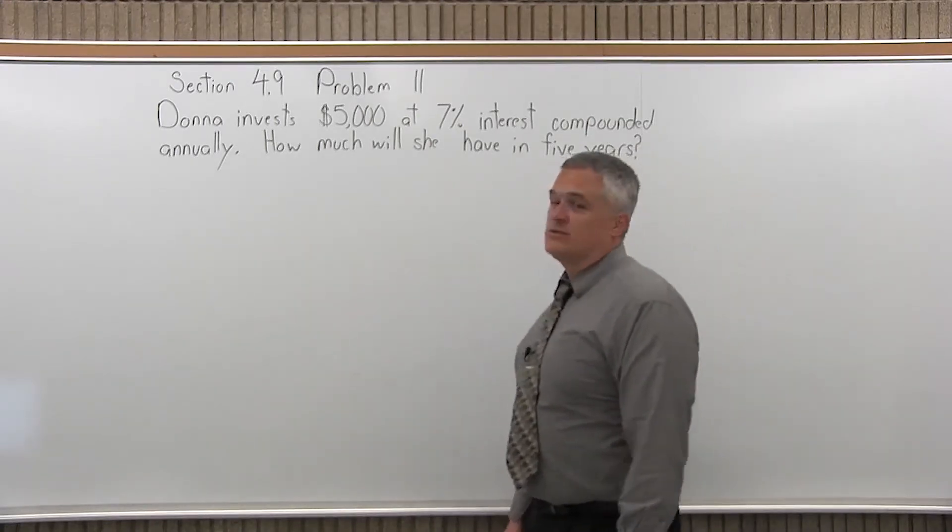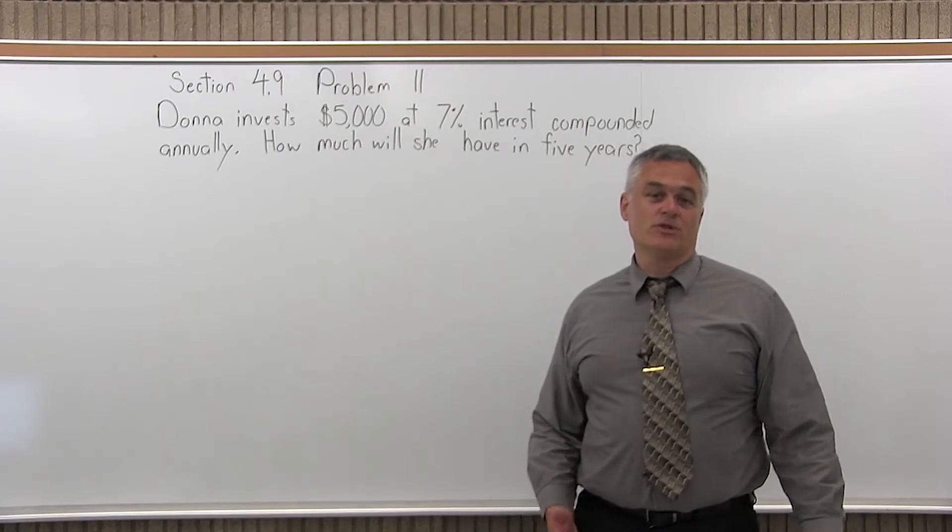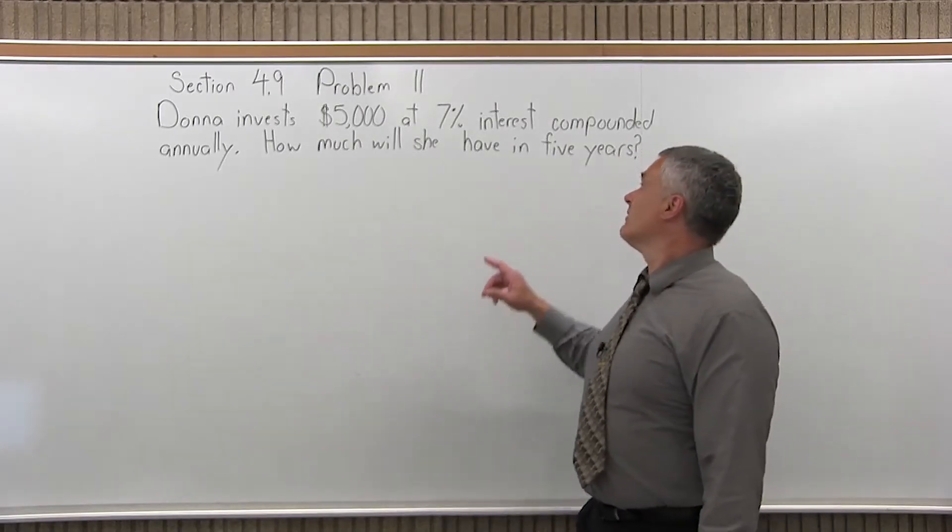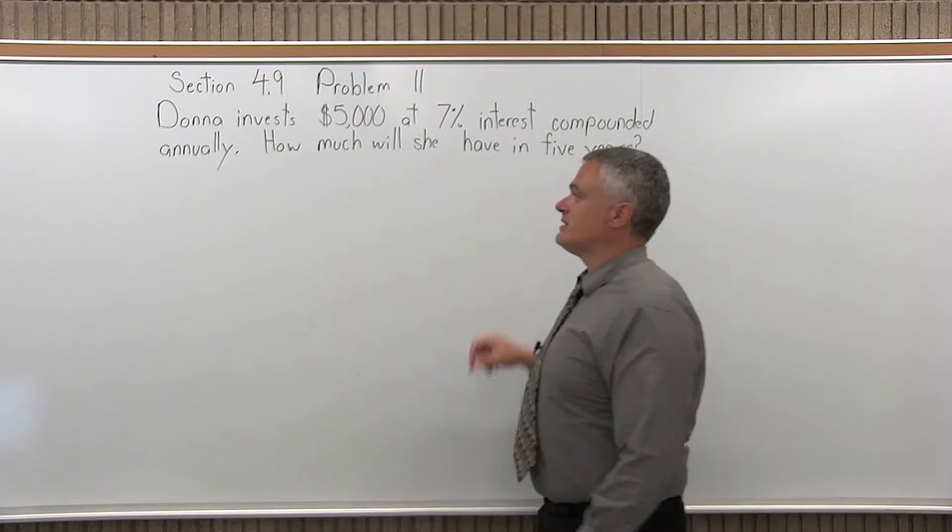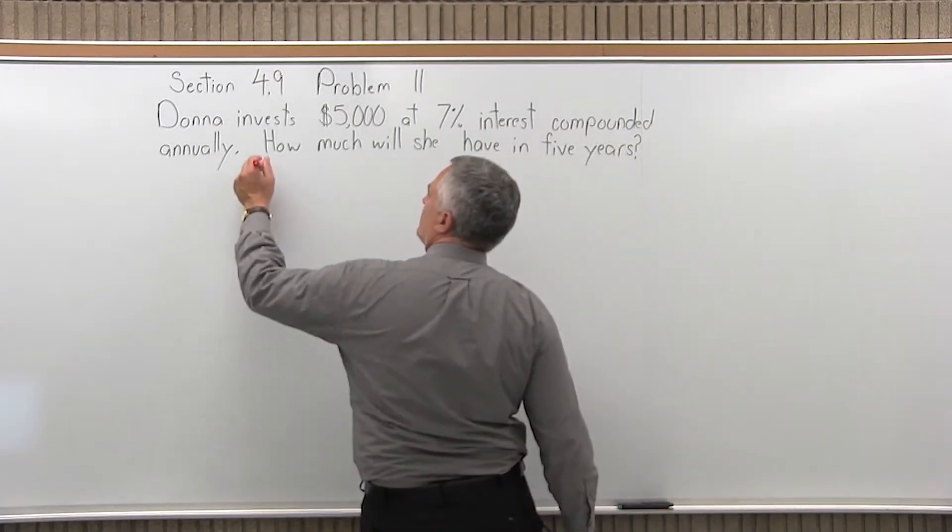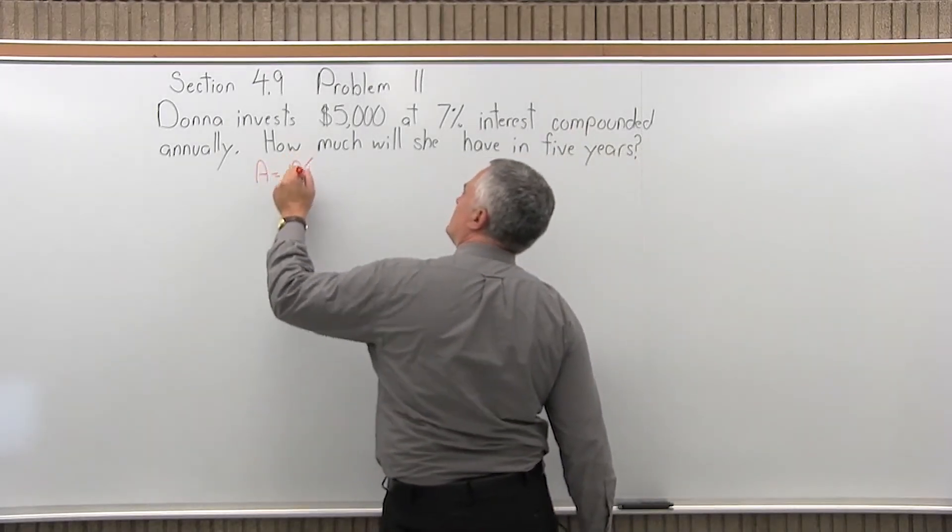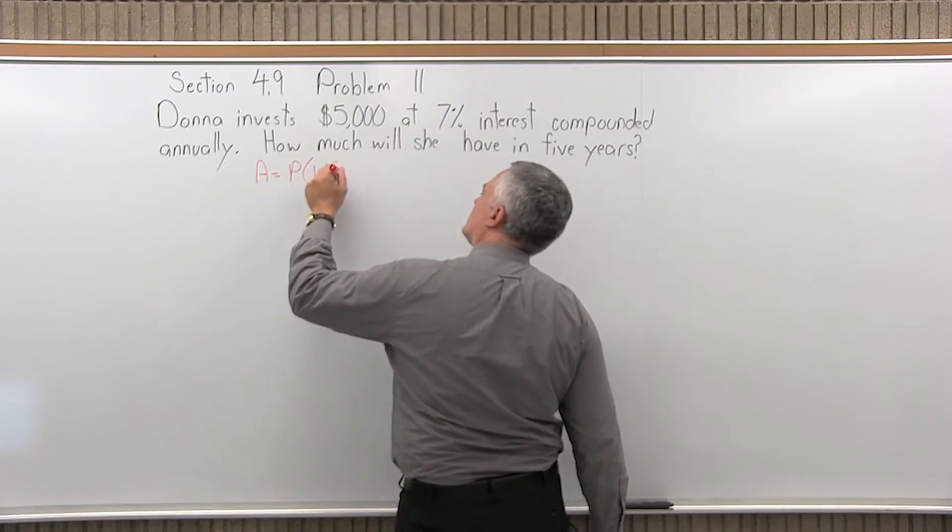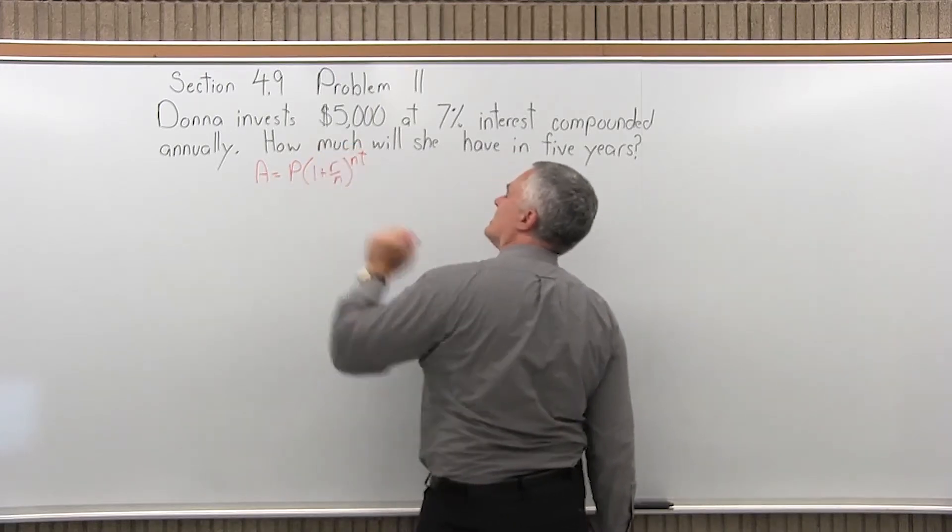So first, which formula do we use, simple interest or compound interest? Definitely compound, because it mentions how frequently it's compounded, the type of compounding. The compound interest formula is A equals P times, in parentheses, 1 plus R over N to the N times T exponent.